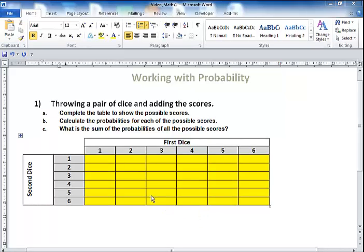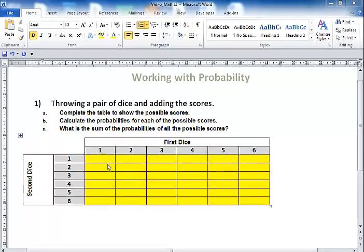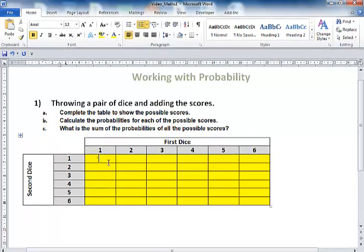This is a probability question where we're throwing a pair of dice and adding the scores together. The first part is for us to complete the table to show the possible scores, so here we go.